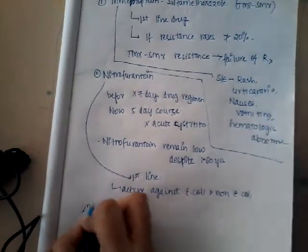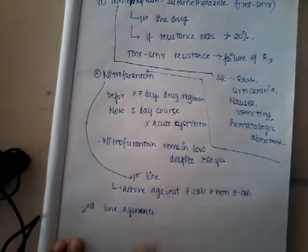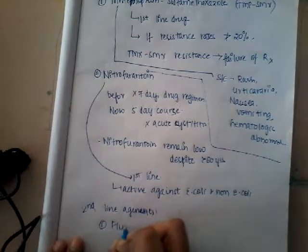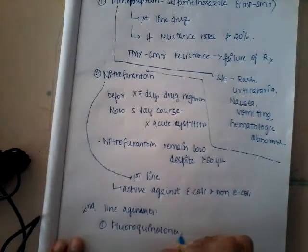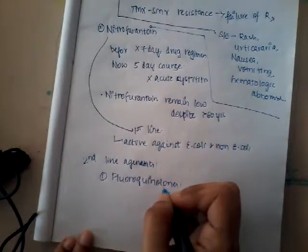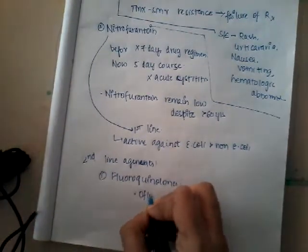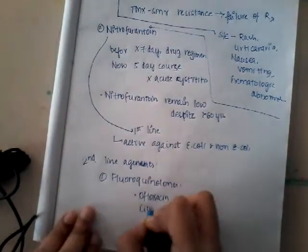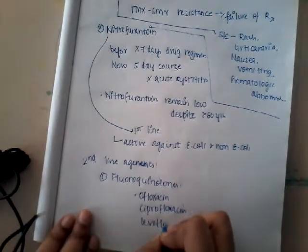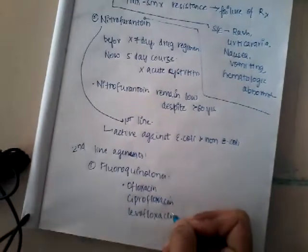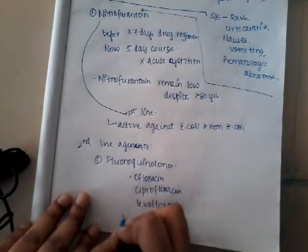The second-line agents include fluoroquinolones, which are effective against cystitis for short-course therapy. Fluoroquinolones that can be used for UTI include ofloxacin, ciprofloxacin, and levofloxacin. The main concern with fluoroquinolones is fluoroquinolone resistance.